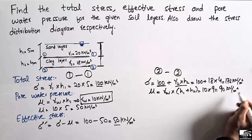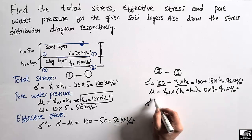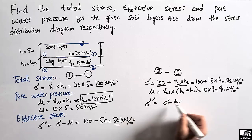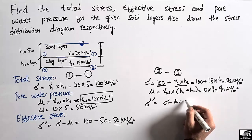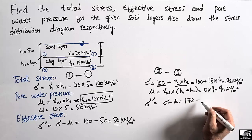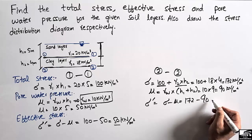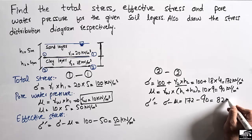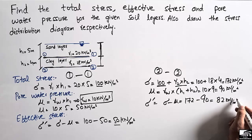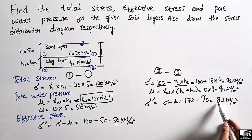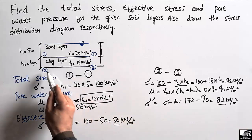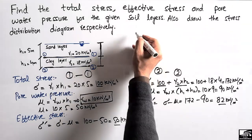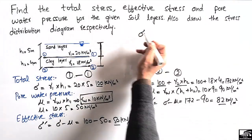The effective stress at section 2-2 equals total stress minus pore water pressure, which is 172 minus 90, giving 82 kN per square meter. This is the effective stress at section 2-2.